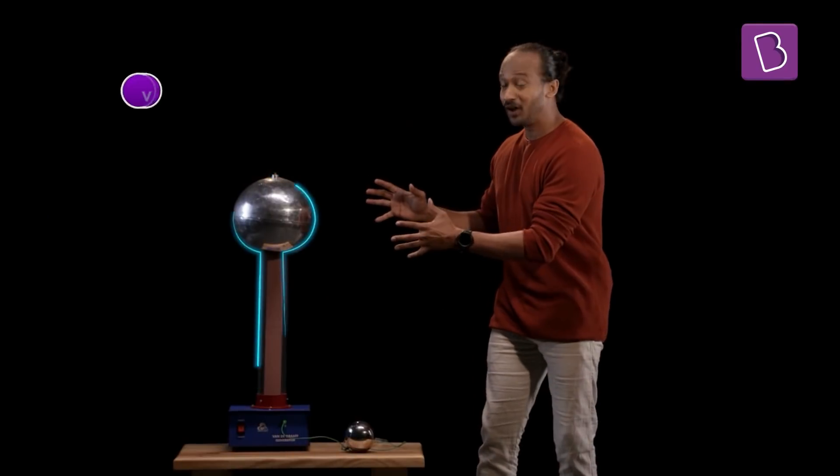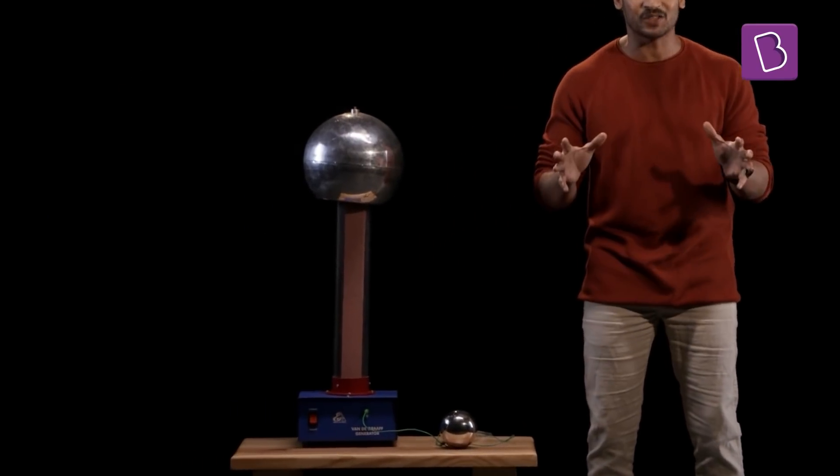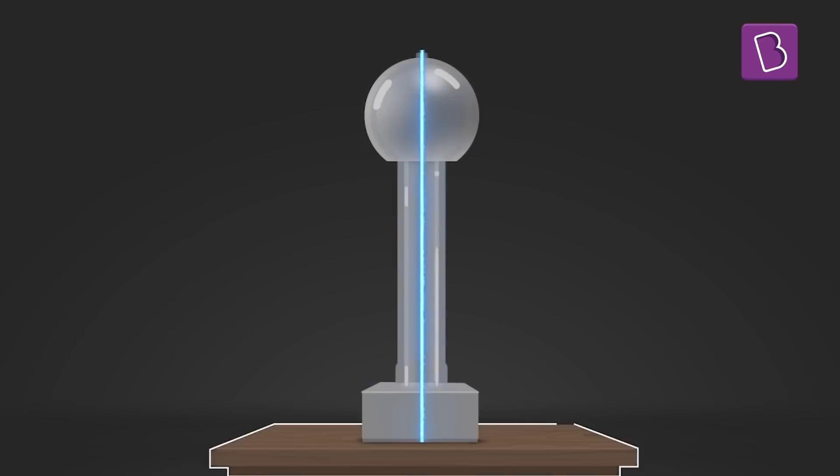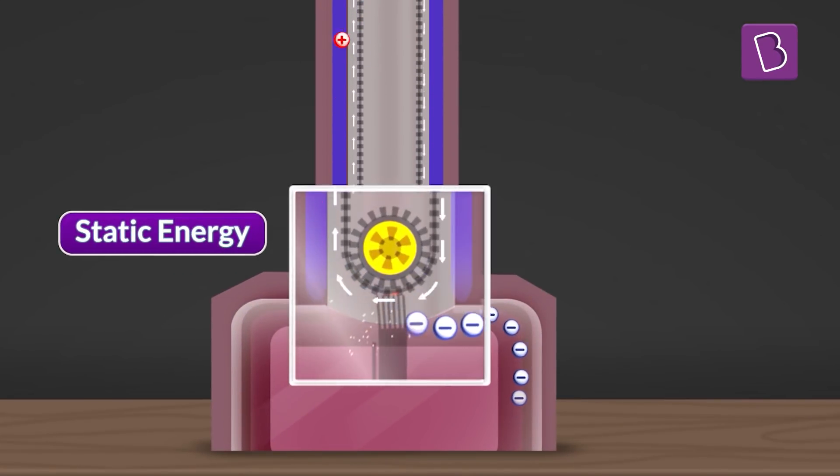Show them your shock machine. Oh yeah, my Van de Graaff generator. This ball of static charges is very similar to clouds during storms. When switched on, it creates friction within and builds up static charges.